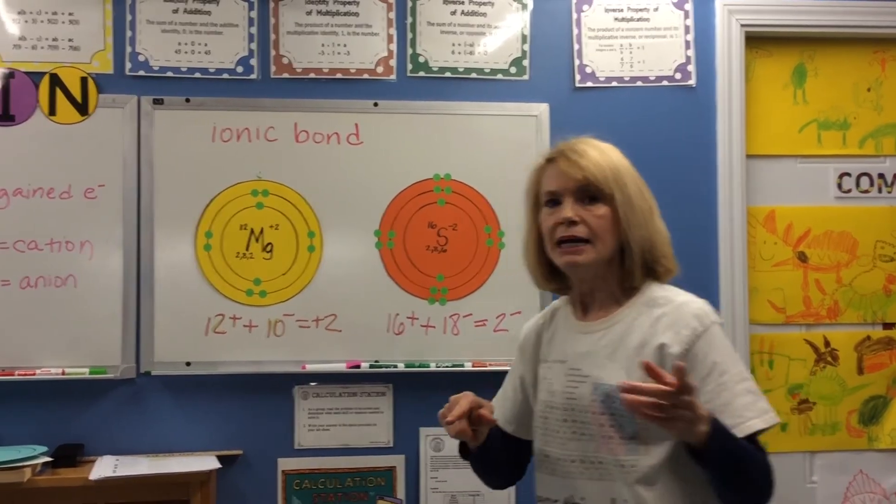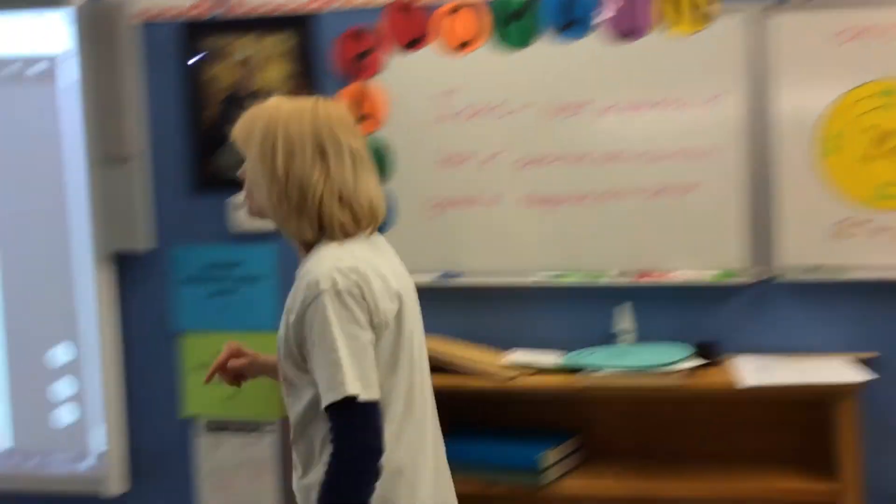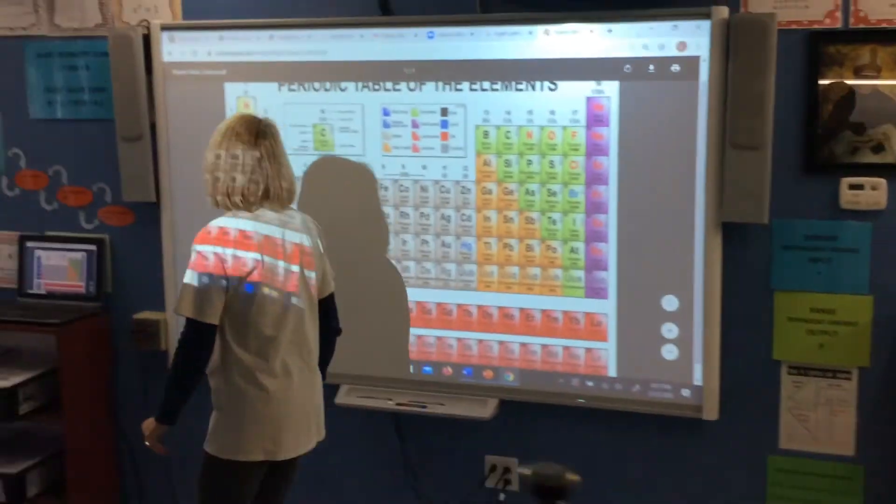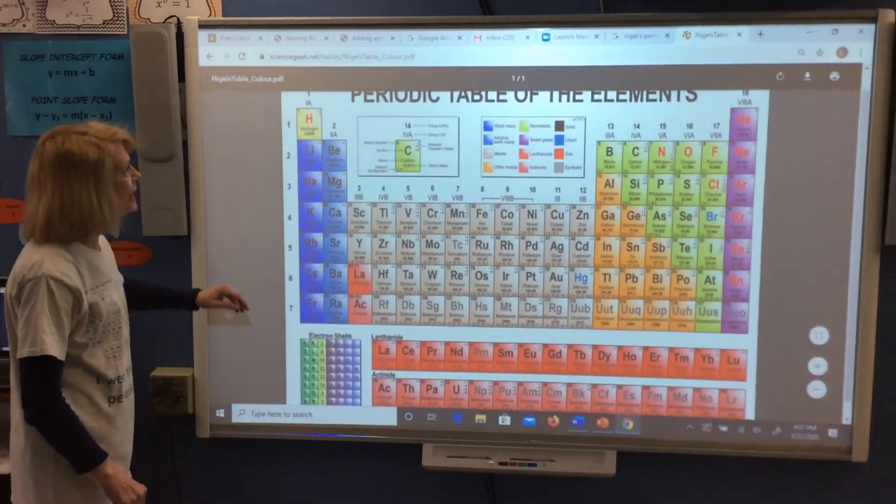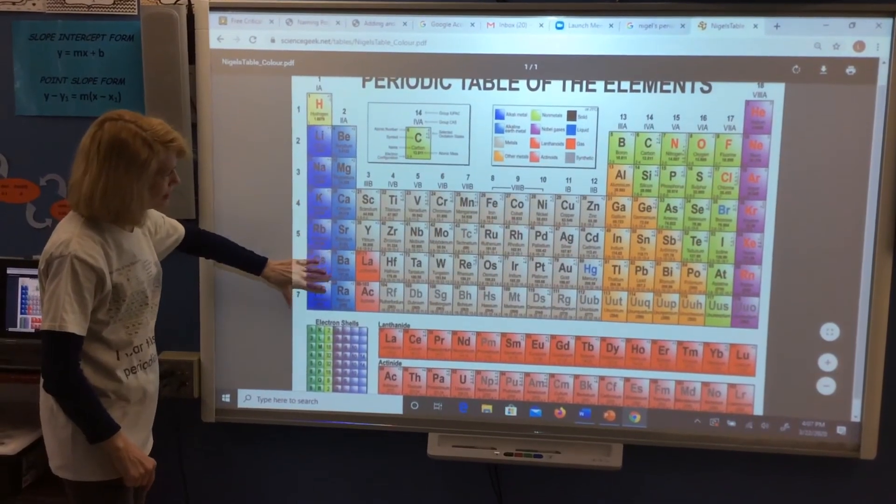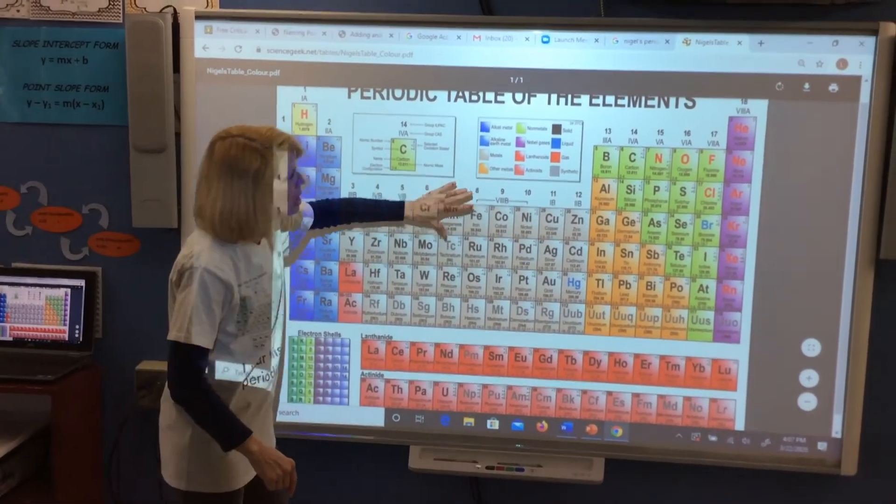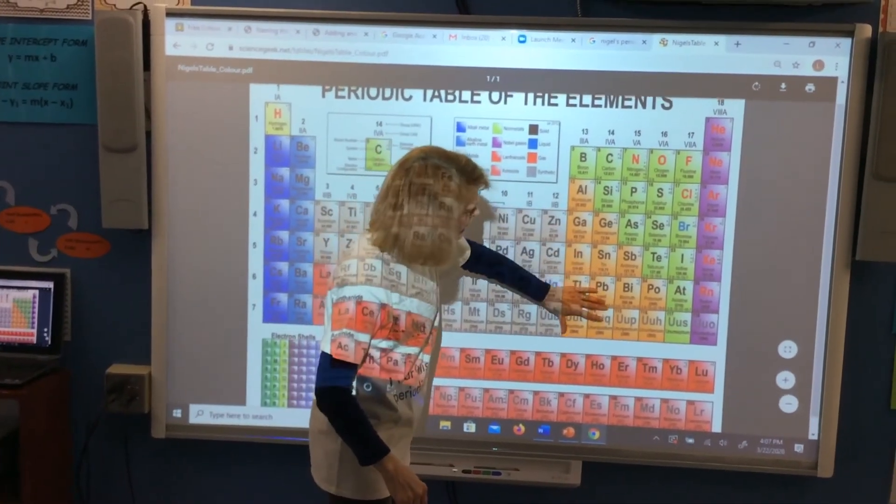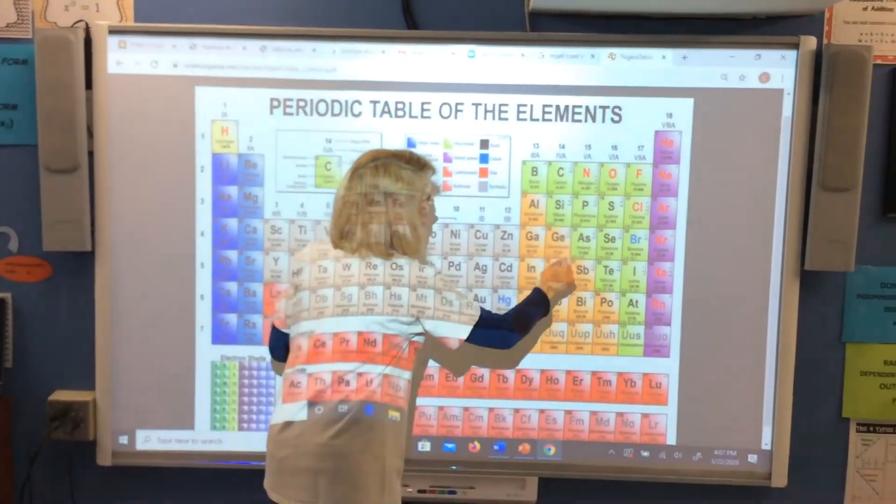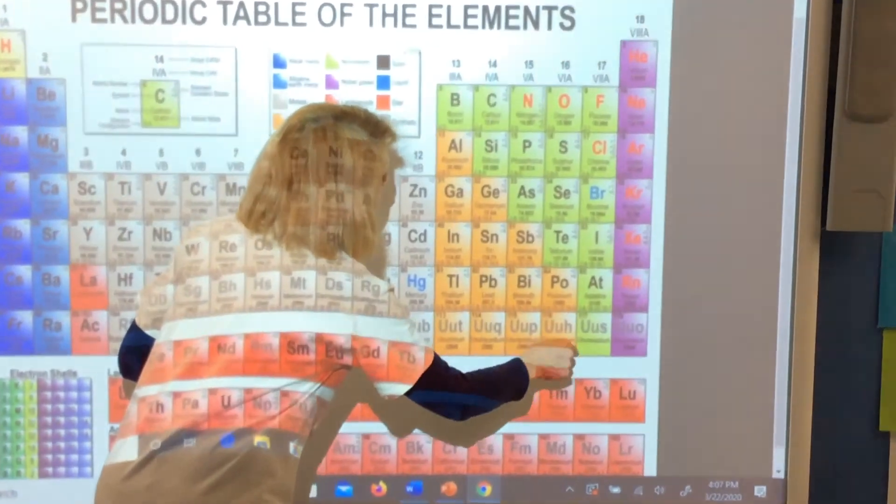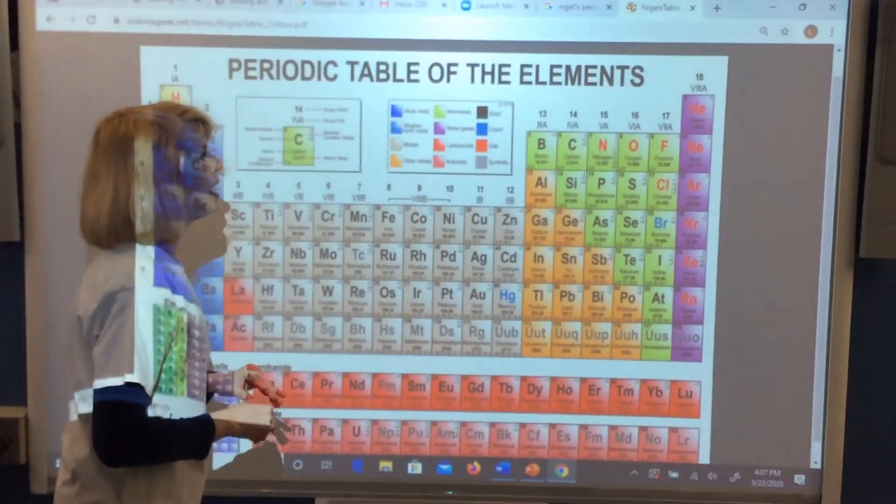If you look back here at the periodic table, ionic bonds form between metals, which actually metals go all the way over to like in here. This zigzag line here cuts off the metals from the non-metals.